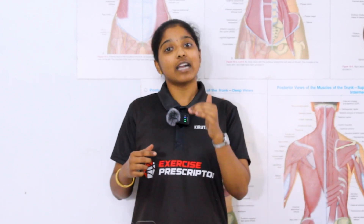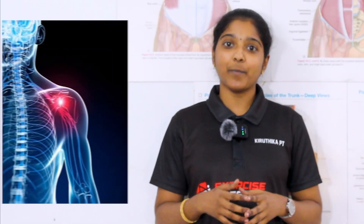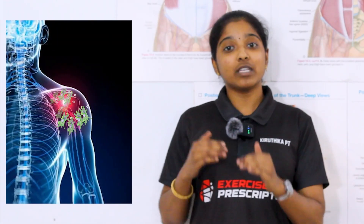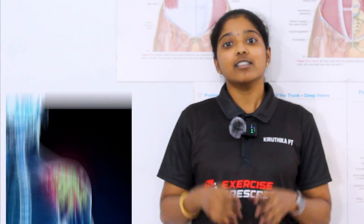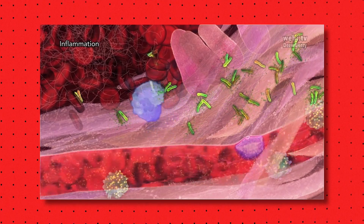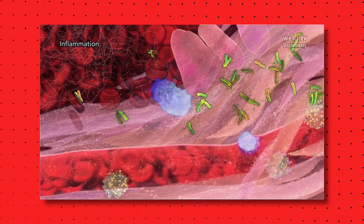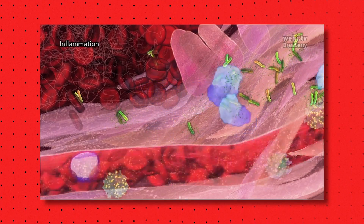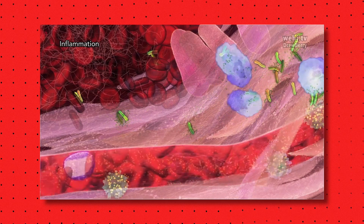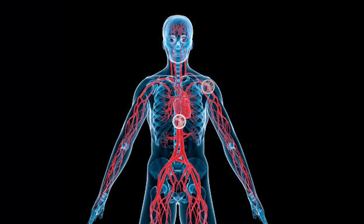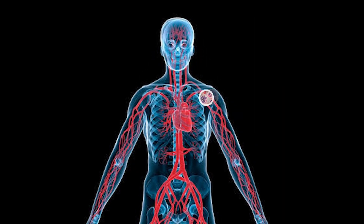The shoulder joint capsule is a lax fibrous sheet which contains very little blood and nerve supply, but it is rich in fibroblast cells. These fibroblast cells are highly responsive to inflammation and react easily with it. This is why in Adhesive Capsulitis, the synovial inflammation mainly targets the shoulder joint.